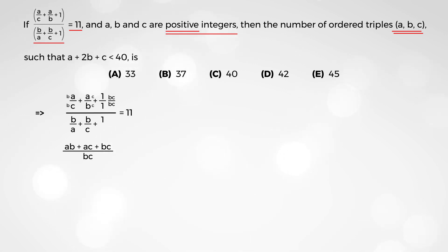And similar here, you're going to multiply top and bottom by c, top and bottom by a, and ac is the common denominator. So, you're going to have bc plus ab plus ac all over ac. And this equals 11.